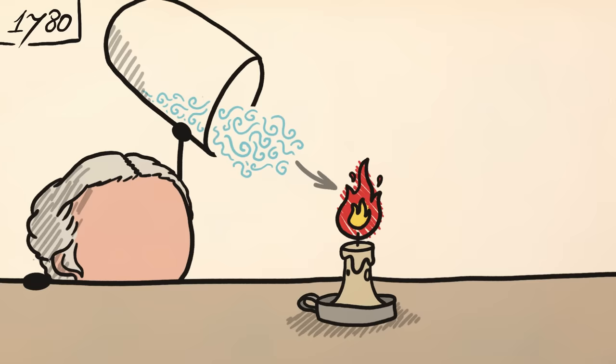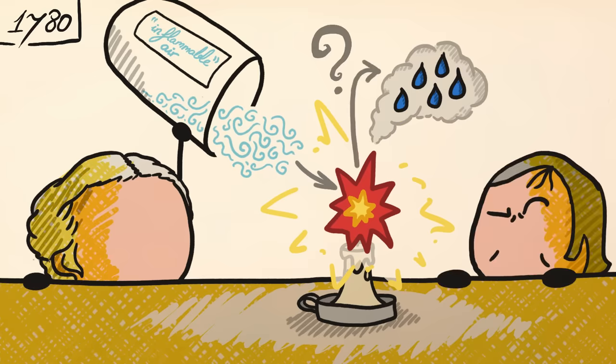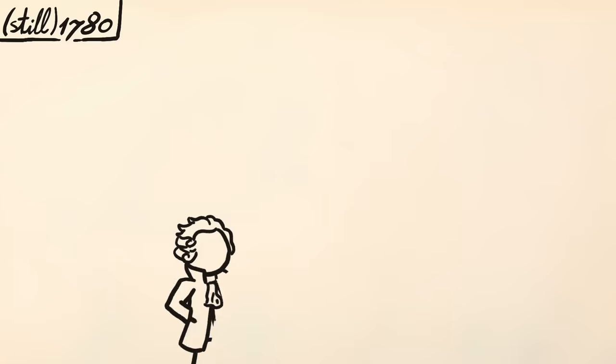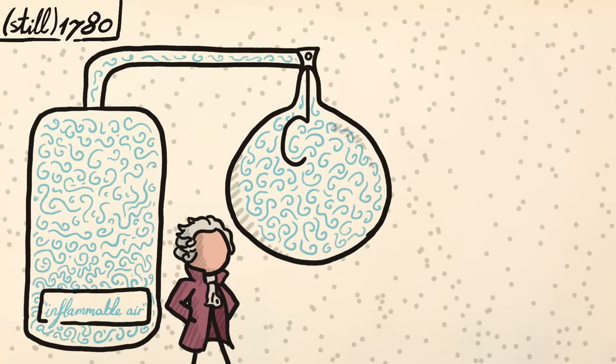However, in the early 1780s, chemists started to notice that when they burned a certain peculiar gas it produced a lot of water. But was this water really being created by the combustion? Or was it just coming from the moisture in the open air? To answer this question, chemists built an airtight vessel sealed away from the atmosphere and pumped in their peculiar gas.